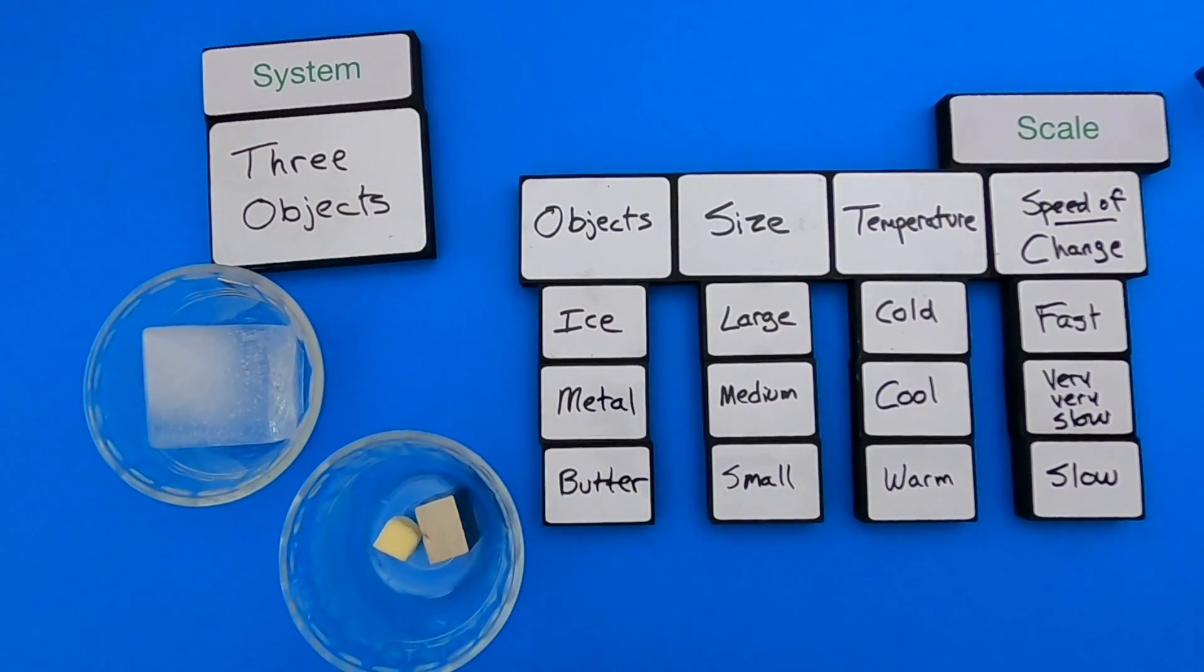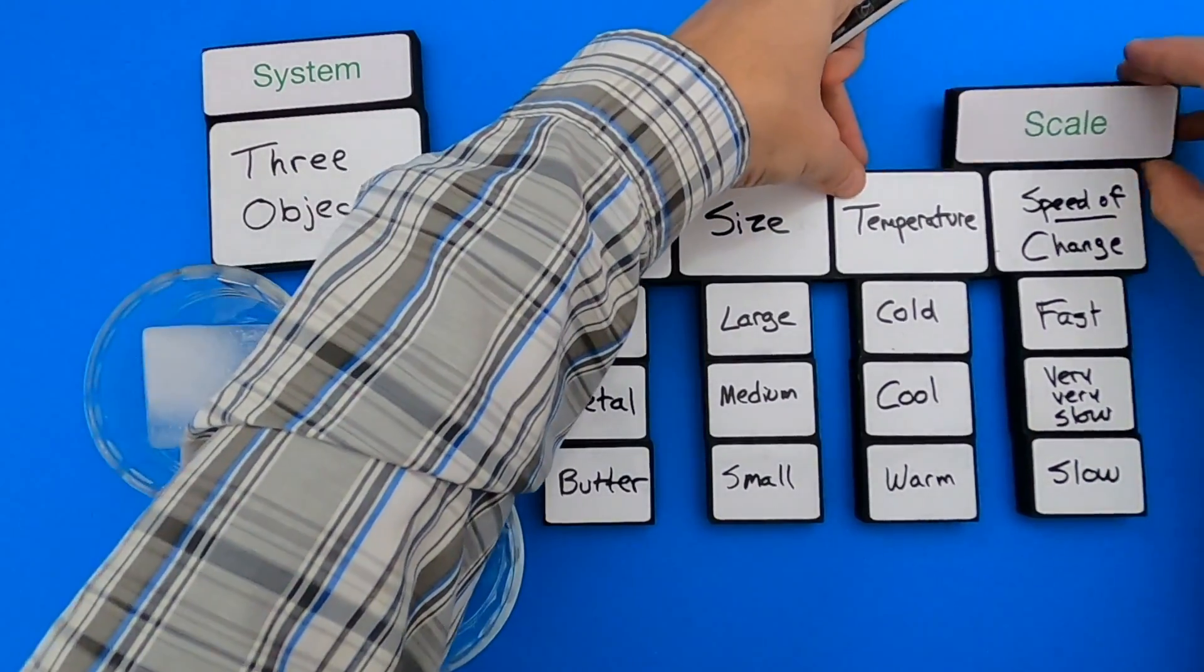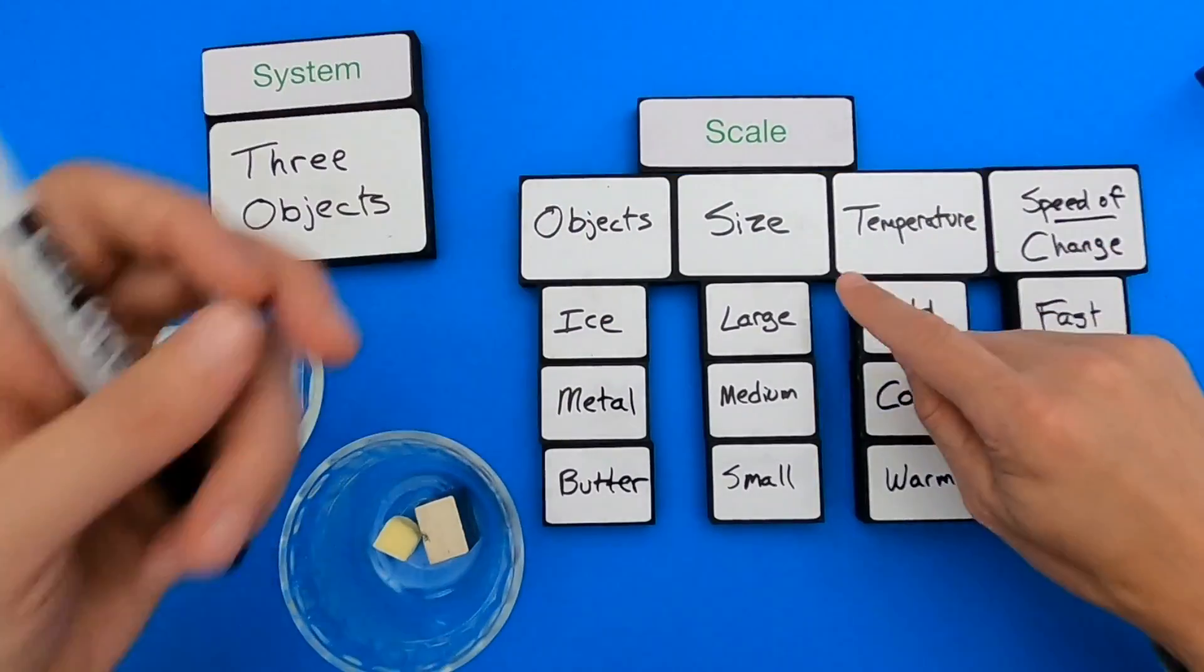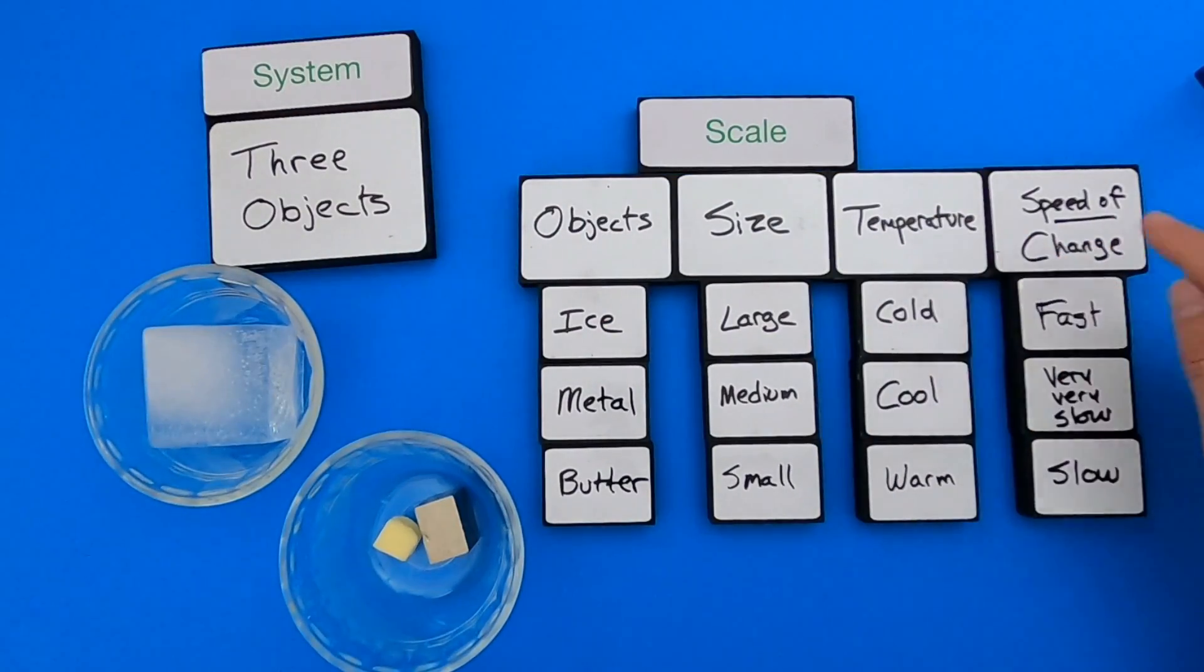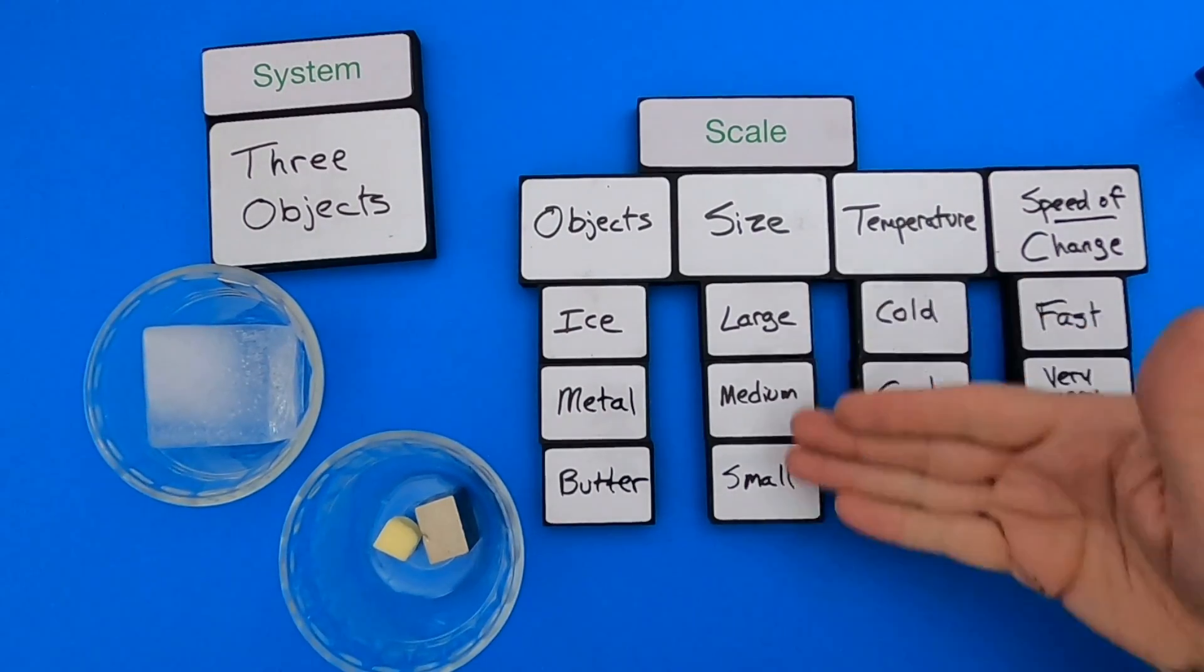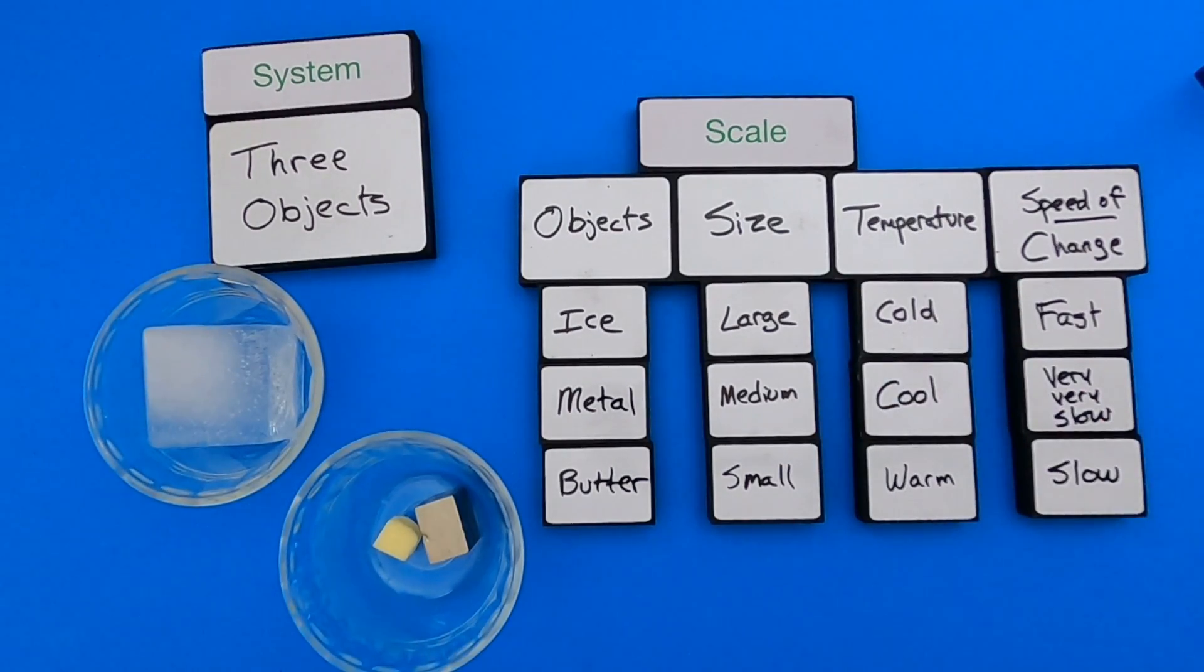And so what I've done so far is I've really just looked at the relative scale. We're looking at the relative size scale, temperature scale, and then speed of change. Now one thing you should be thinking as we go through this is these are just relative. I'm not measuring anything. And that's because we'll talk about quantity in the next video. So I've shown you my thinking around relative scale in these three objects. So I'm going to take a minute to just clean this off. And then I'm going to give you a different object, and you're going to try to do the same thing.